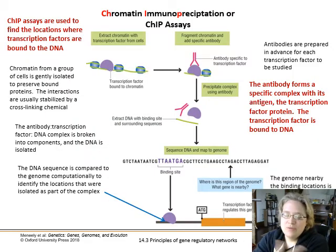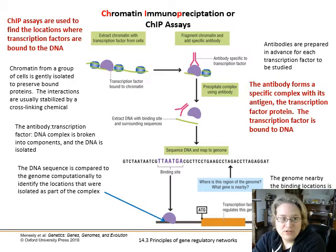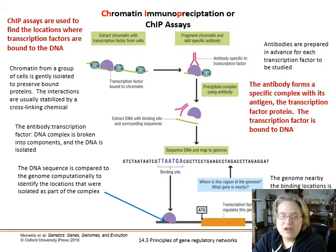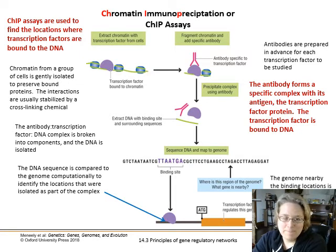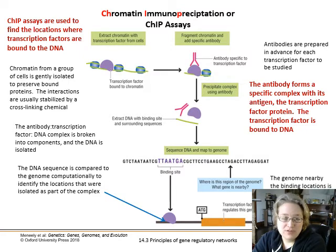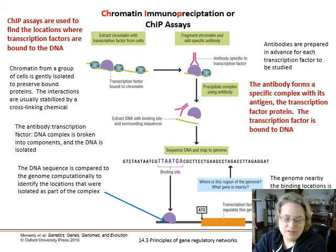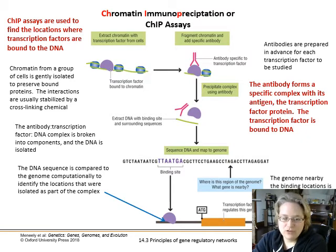One of the ways we find out what transcription factors go with what genes is chromatin immunoprecipitation, or ChIP assay. We grab the DNA that the transcription factors are attached to, and then we sequence it. You grab the chromatin that has the transcription factors bound, fragment it, get a specific antibody to that transcription factor to pull it out, extract the DNA from that complex, sequence it, and map it to the genome to find exactly where that transcription factor was acting.